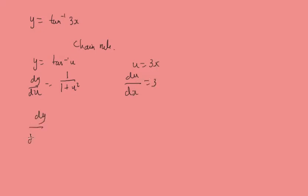So, dy by dx is going to be 1 over 1 plus 3x squared times 3 which gives us 3 over 1 plus 9x squared.